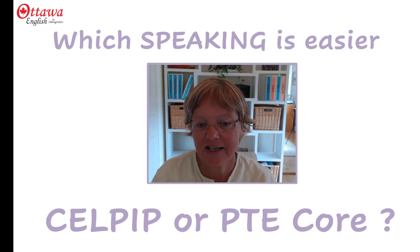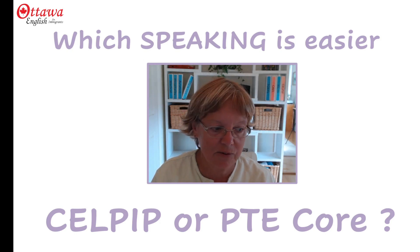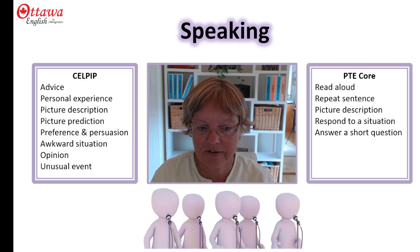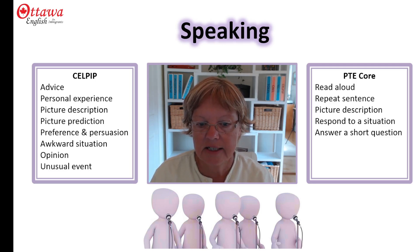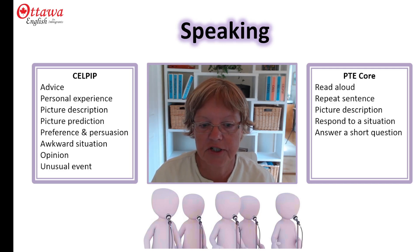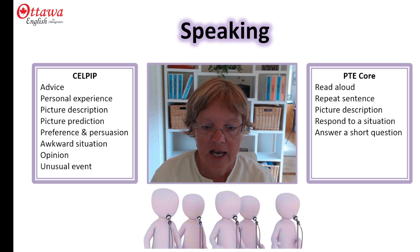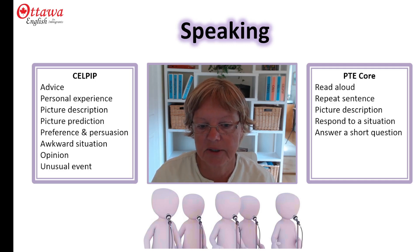Both of the tests have a very specific list of questions. In CELPIP you have eight questions. The first one asks you to advise someone about something, and then you go on to talk about a personal experience, describe a picture, and predict what might happen in that picture. After that you express your preference for something and persuade someone else that your preference is superior, and then you'll also have to deal with an awkward situation, offer your opinion about something, and describe an unusual event.